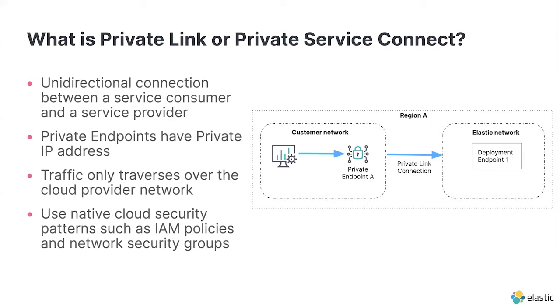You're basically connecting securely from those clients that might be sending data to your Elasticsearch cluster or making search queries. It is a unidirectional connection — a one-way connection from those clients to your deployment endpoints that can belong to Elasticsearch, Kibana, APM, or any of our other hosted products. All of this happens through a private link endpoint on the consumer network that has a private IP address, and all traffic is guaranteed to traverse only through the cloud provider network. As a client, you can use IAM policies and network security groups to restrict access to those endpoints. From a client perspective, it almost seems like the Elasticsearch cluster is actually hosted in your own network, because they are only interacting with this private endpoint that has a private IP address.